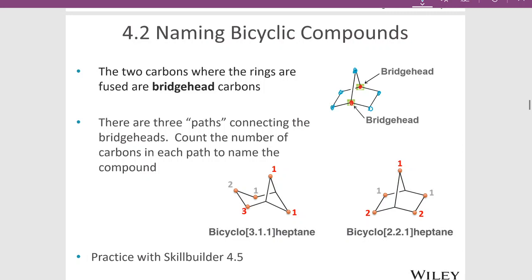Looking at the molecule on the left, the bridge head carbons are highlighted in blue. We have a one-carbon path to the right (in green), a one-carbon path at the top, and a three-carbon path to the left. We would call that bicyclo because it has two rings fused together. Because of these different paths — three, one, one — the name begins with 'bicyclo[3.1.1]'.